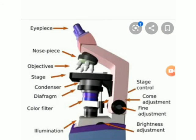With the stage adjustment knob, we can move the slide up and down and sideways, right and left.